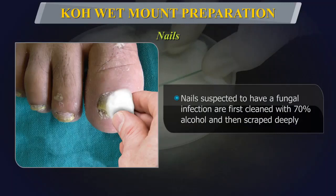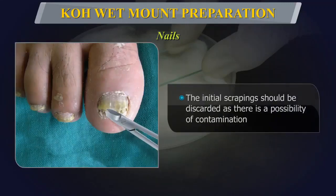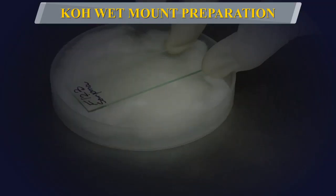Nails suspected to have a fungal infection should first be cleaned with 70% alcohol and then scraped deeply to obtain recently infected nail tissue. The initial scrapings should be discarded as there is a possibility of contamination.